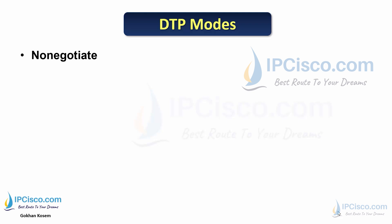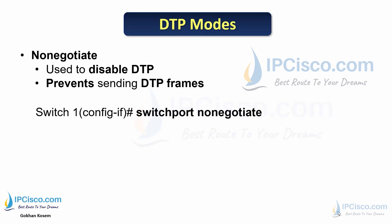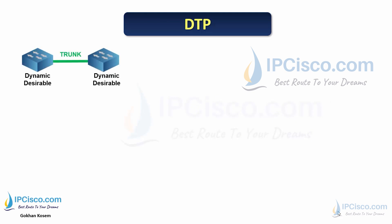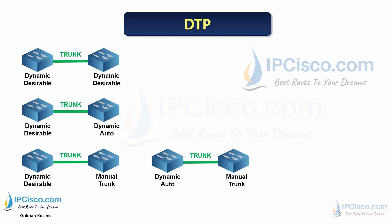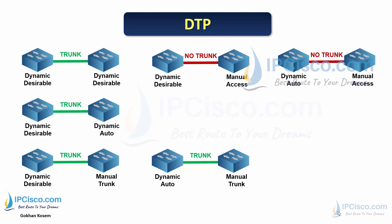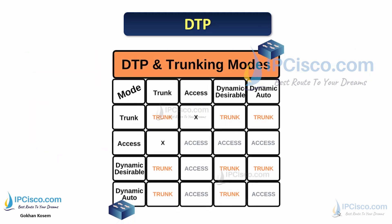Non-negotiate is used to disable DTP. It prevents sending DTP frames and is configured with the 'switchport nonegotiate' command. When both ends are dynamic desirable, the link becomes a trunk. If one end is dynamic desirable and the other is dynamic auto, trunk is built. Dynamic desirable with manual config also forms a trunk. However, dynamic desirable or dynamic auto with a manual access mode config does not become a trunk. If both ends are dynamic auto, no trunk link is created either. A DTP mode table summarizes these results.